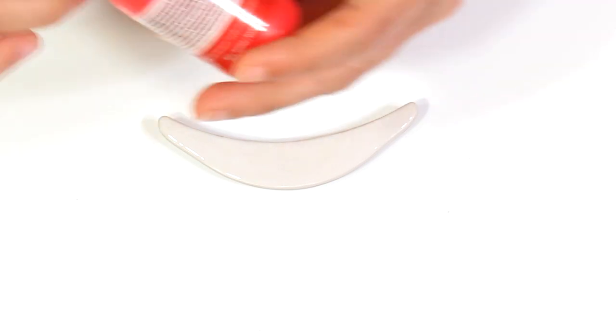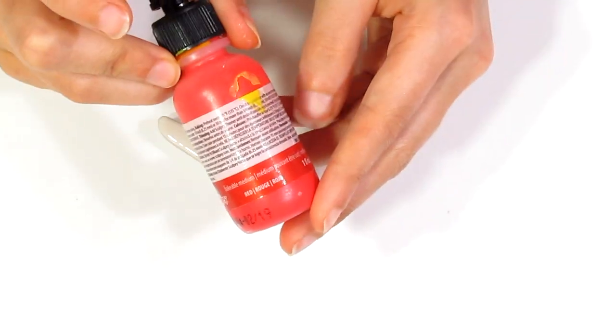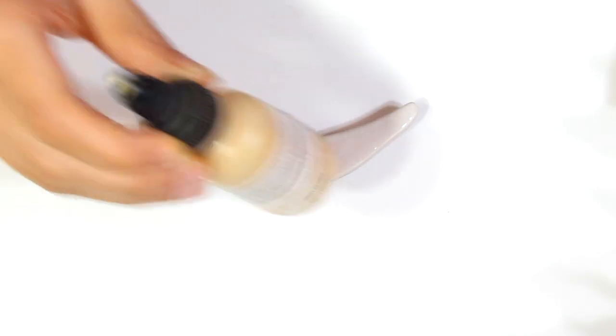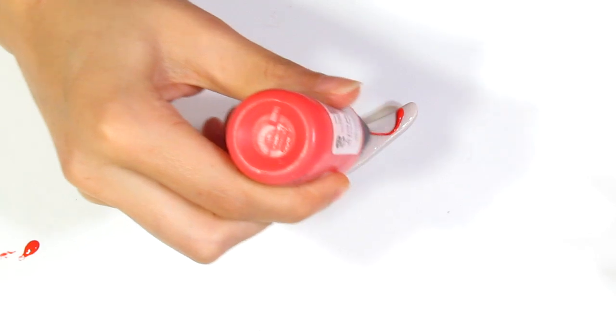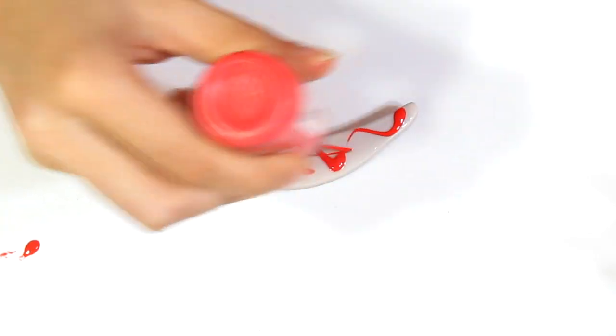And then we're ready to start. I'm going to be using Sculpey liquid clay. I have red, blue, yellow, and gold. I'm just going to get that running, then squirt it over the surface like so.